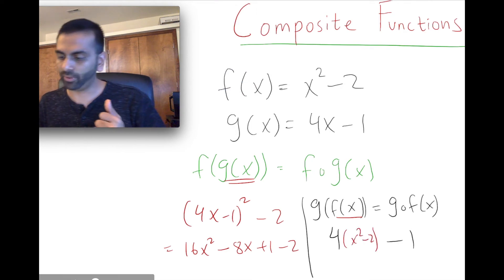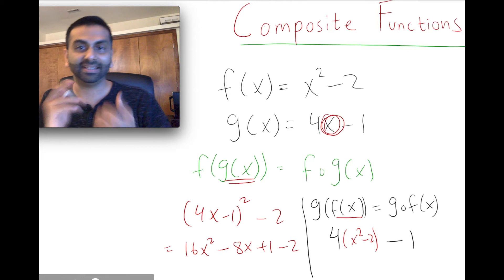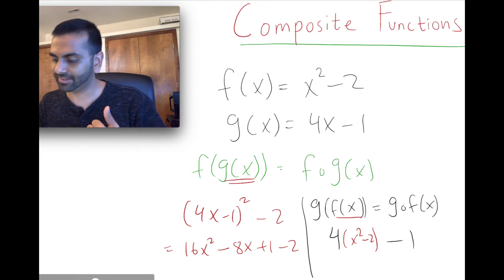But notice that the 4 is multiplied to the x. So that 4 is multiplied to this entire x squared minus 2, not just that x squared. So distributing it out, that's going to be 4x squared minus 8 minus 1. So you could simplify that to 4x squared minus 9.